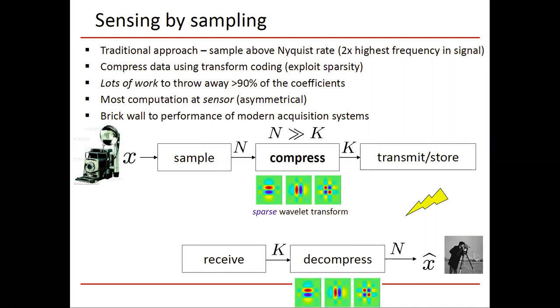Another comment is that this traditional DSP system is somewhat asymmetric, where there's a lot of computation at the sensor, the encoder side, which is often battery operated, for example a phone, whereas the decoder side, you're often plugged into the wall and you often have a lot of energy. So it's kind of mismatched to the capabilities that we have in some systems, and this really is creating a brick wall to performance in some modern acquisition systems.